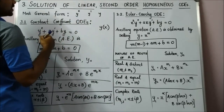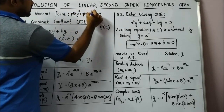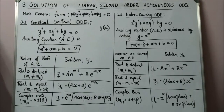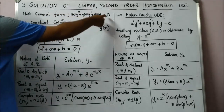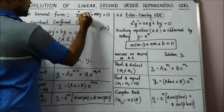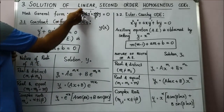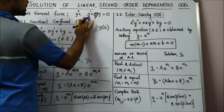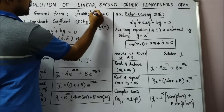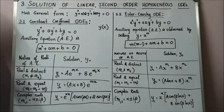So there should be a Y double prime term, a Y prime term, and a Y term. Because it is homogeneous, every term should have the presence of the dependent variable. And because it is linear, the coefficients — I will call them P of X, Q of X, R of X — cannot contain Y, but can only be a function of X. This is the most general form. If I divide by P of X, I get Q/P and R/P, which are still functions of X, so I can call them A of X and so on.